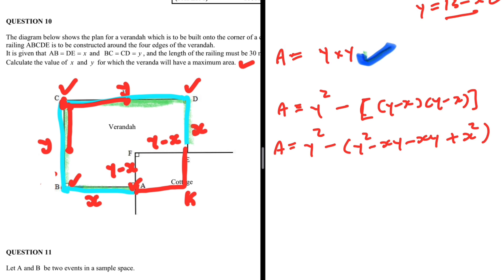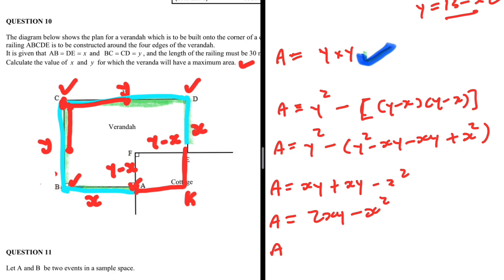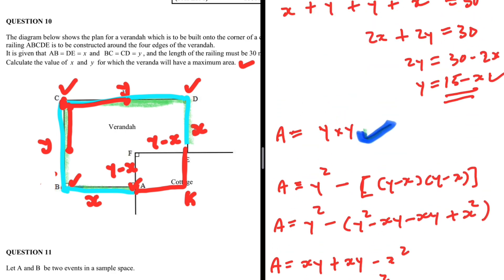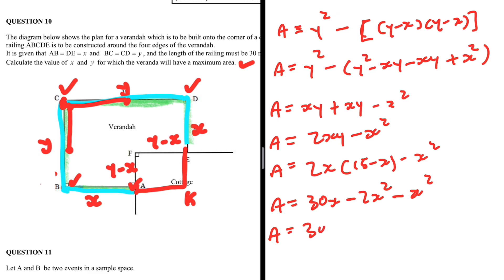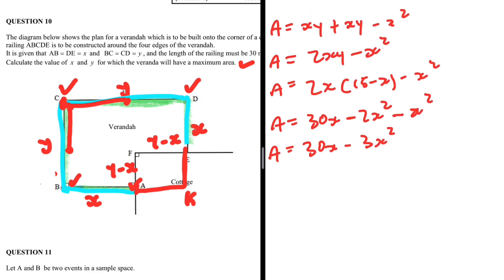The y squared terms cancel, leaving Area equals 2xy minus x squared. Substituting y equals 15 minus x: Area equals 2x(15 minus x) minus x squared, which equals 30x minus 2x squared minus x squared. So the area equals 30x minus 3x squared.